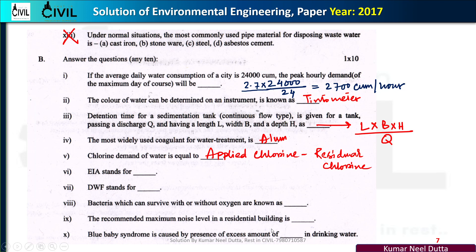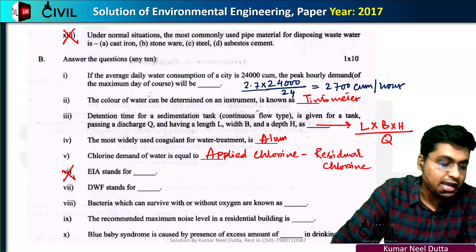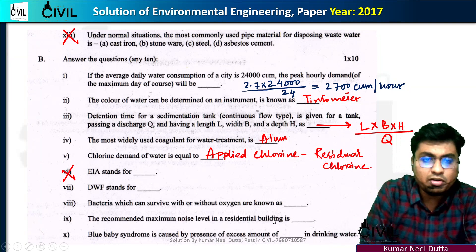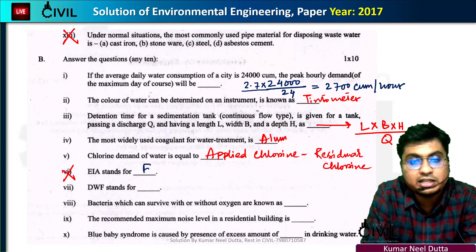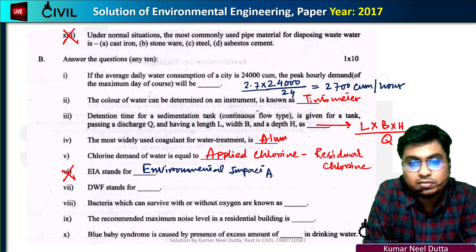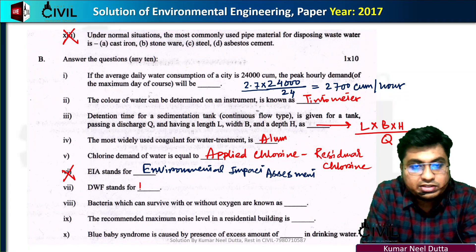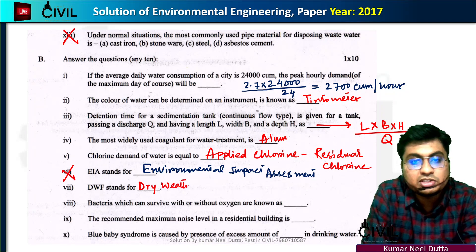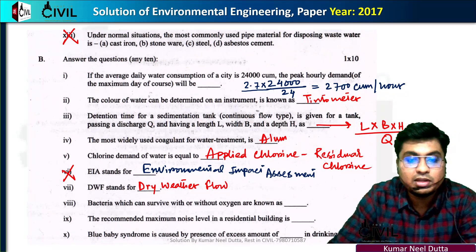The next key term is EIA — Environmental Impact Assessment. Another key term is DWF, which stands for Dry Weather Flow.